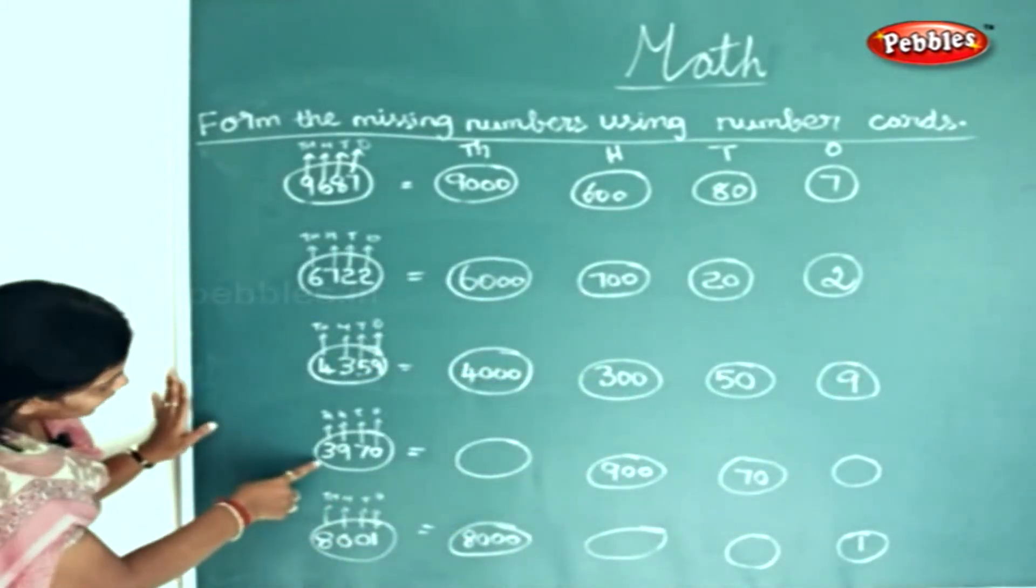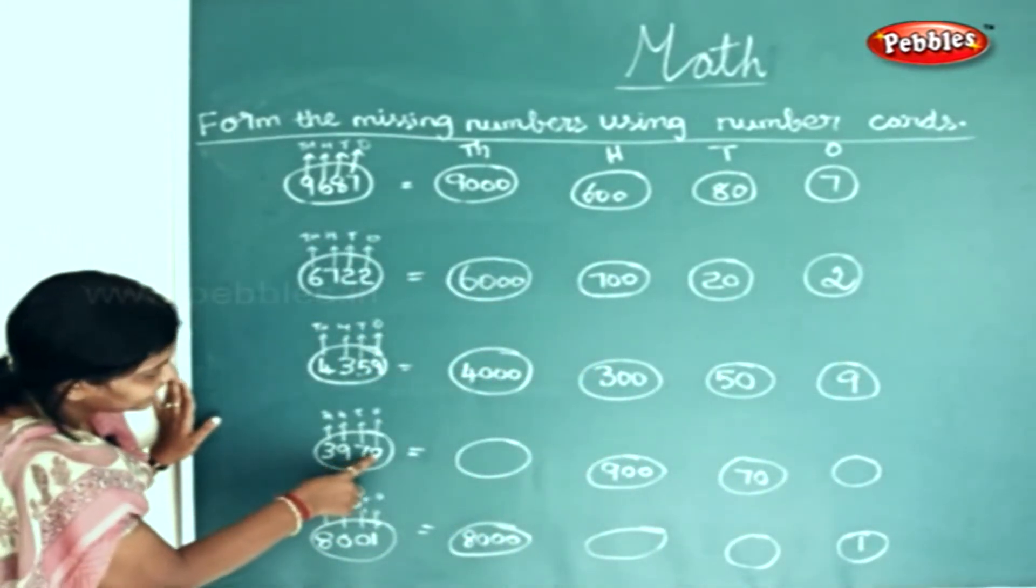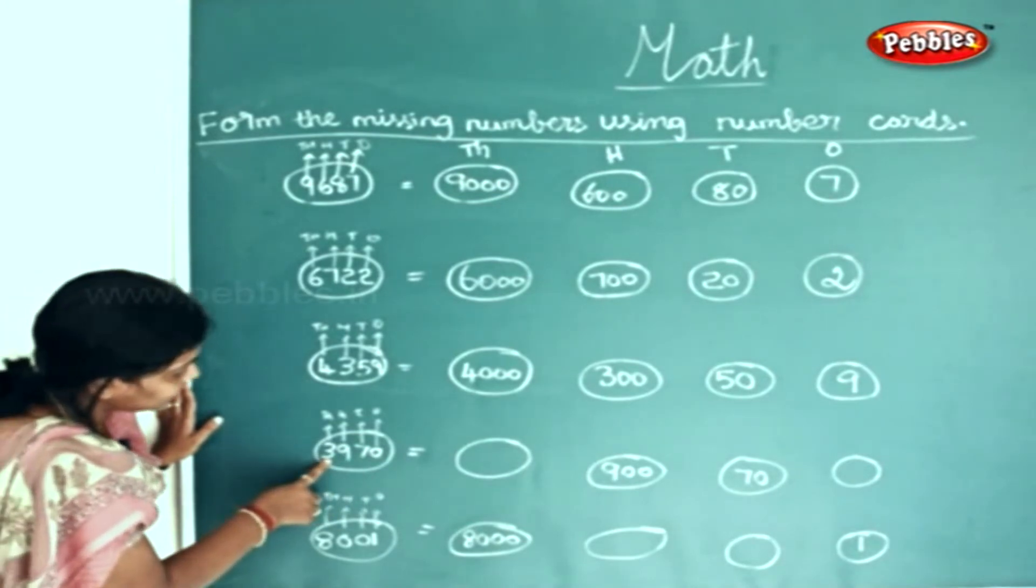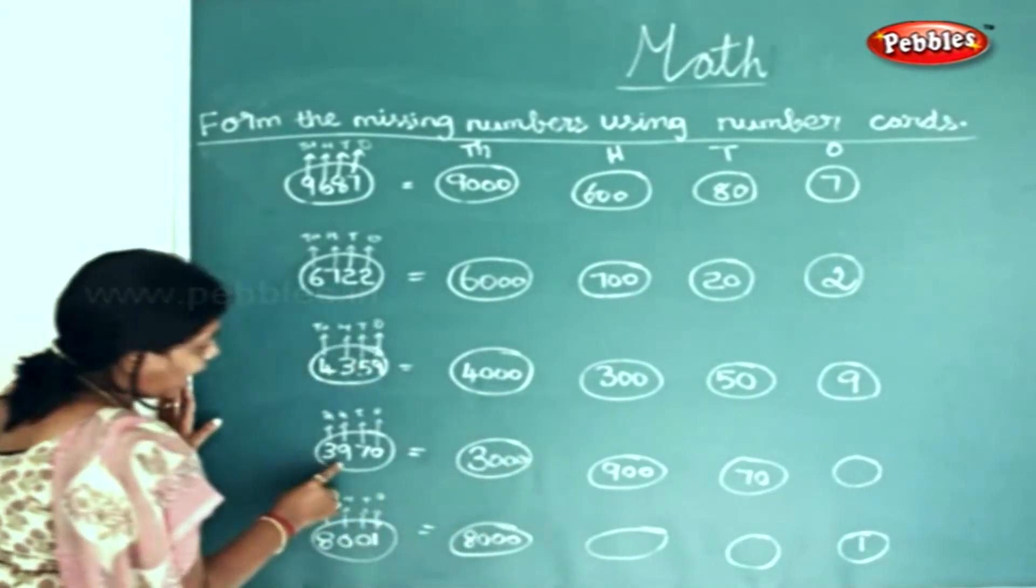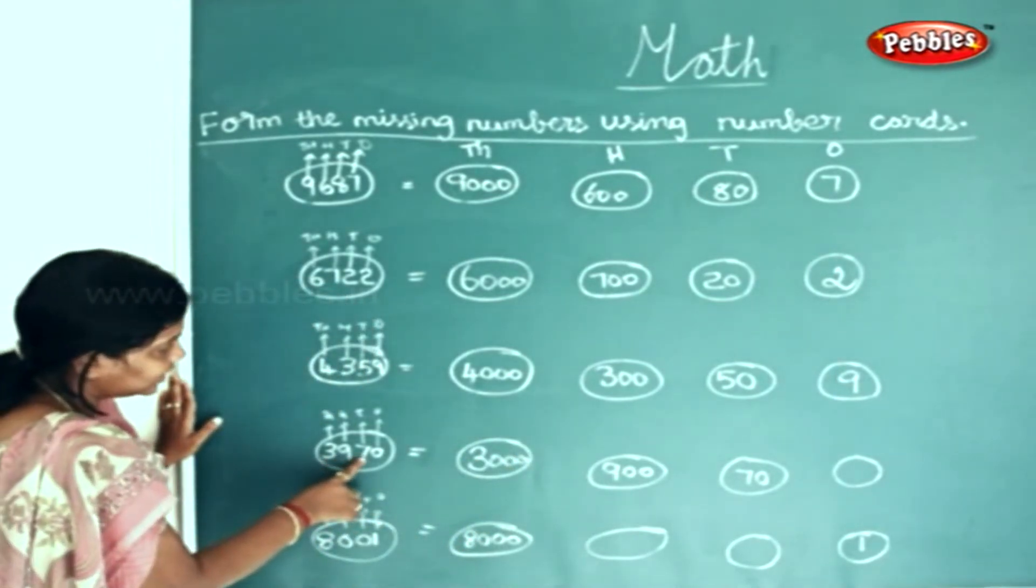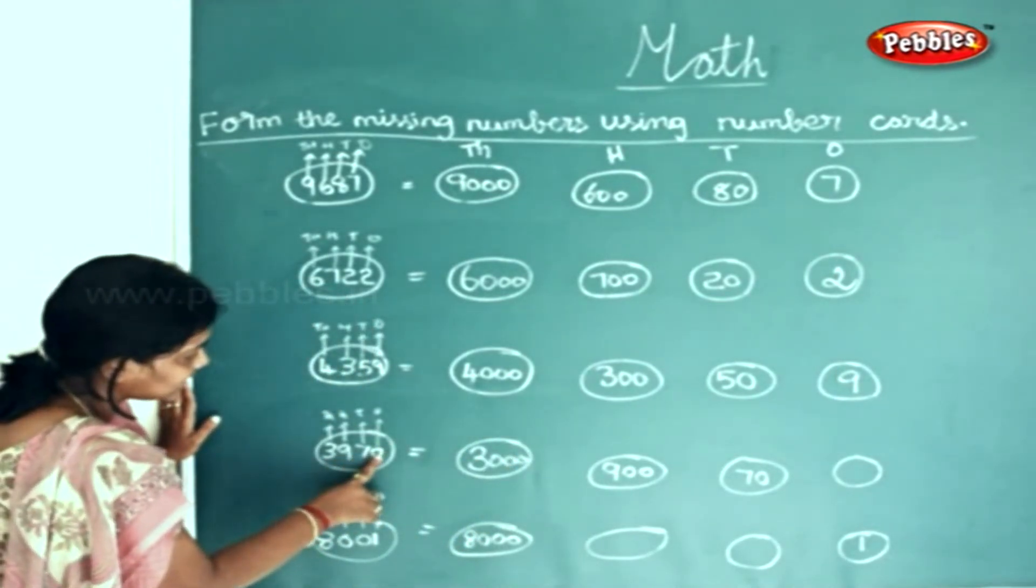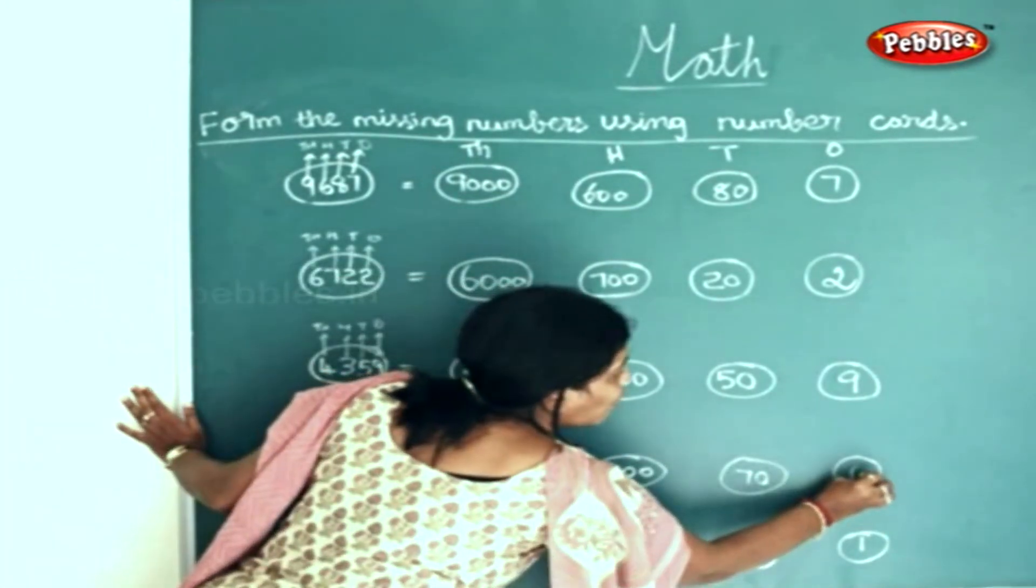In this sum, 3,970. How many thousands? 3 thousands. How many hundreds? 9 hundreds. How many tens? 7 tens. How many ones? 0 ones.